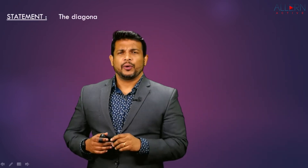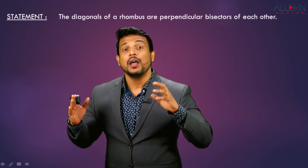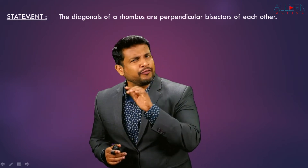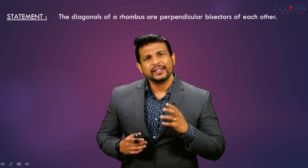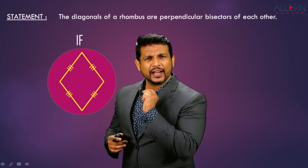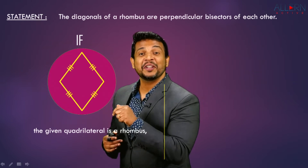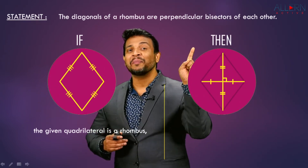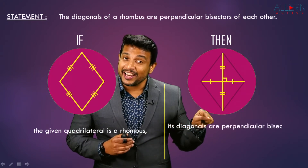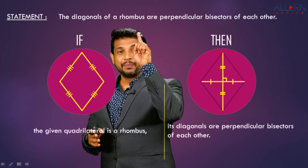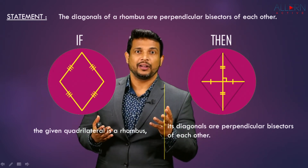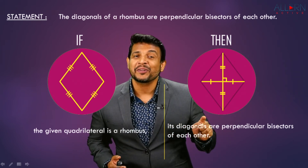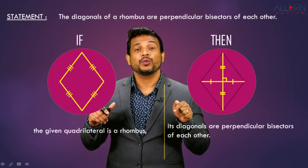Consider this statement: 'The diagonals of a rhombus are perpendicular bisectors of each other.' That is not in conditional form because it's not in the if-then form. Let's rewrite it: if the given quadrilateral is a rhombus, then its diagonals are perpendicular bisectors of each other. Now this is a conditional statement.